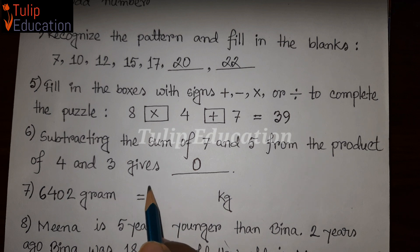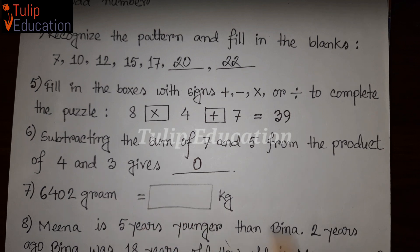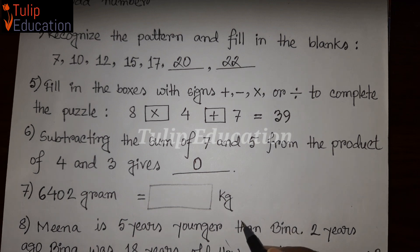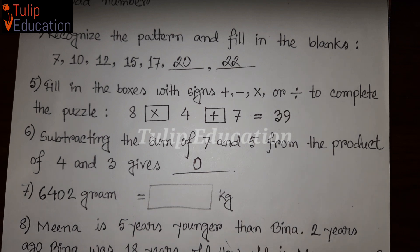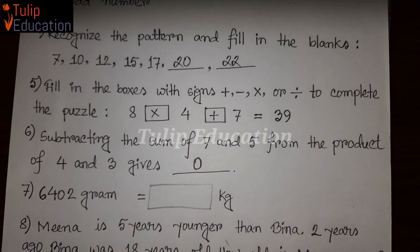In this tutorial, I am going to explain the gram and kilogram relationship. We know that 1,000 grams equals 1 kg. If we want to convert grams to kilograms, we divide by 1,000.